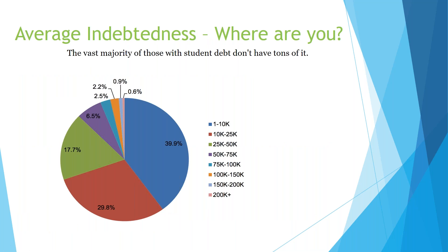Student loans have been a topic of conversation in the news for the last two years. There is over a trillion dollars in student loan debt out there, and we wanted to give you an idea of where you might fall. This recent pie chart shows that a lot of students who have debt don't have a lot of debt — it's manageable, and we hope that's the case for you. What hits the papers are those students with $100,000 or $200,000 in debt who aren't making payments. For most students, debt is manageable as long as you are aware of it and stay on top of it.